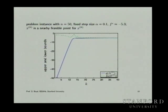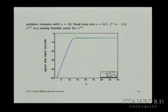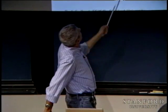This shows G of lambda — these are lower bounds on the optimal value, and they converge. This is the upper bound found by finding a nearby feasible point.